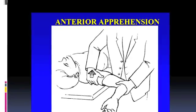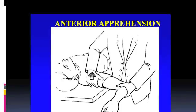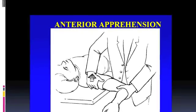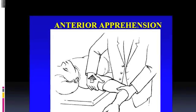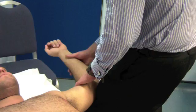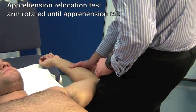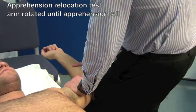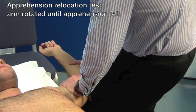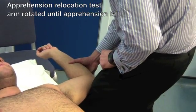The most reproducible test for anterior instability is the anterior apprehension and relocation test. The patient is placed on their back and the shoulder is gently moved into a position of apprehension. When the feeling of apprehension occurs, downward pressure is placed on the arm pushing the shoulder back in. This should relieve the feeling of apprehension, and removal of the pressure means the symptoms will return.